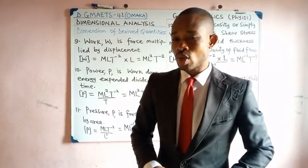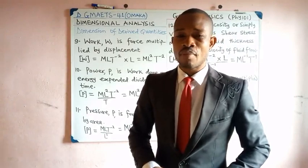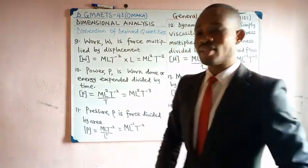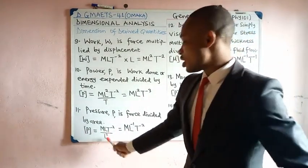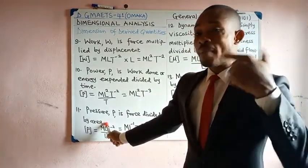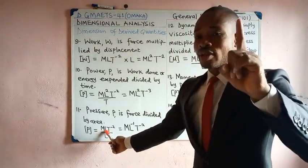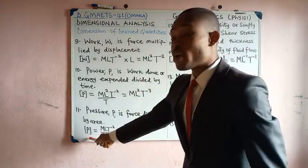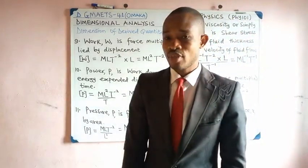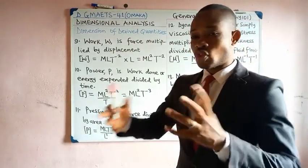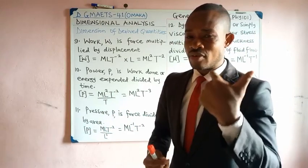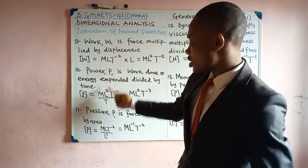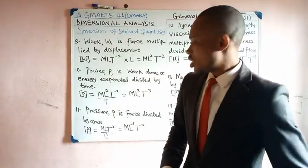Pressure, by Pascal's law, is force divided by area. The dimension of force is MLT⁻² and the dimension of area is L². Taking L² from denominator to numerator changes its power to −2. The L in the numerator already has power 1, so 1 + (−2) = −1 as the power of L. Therefore, the dimension of pressure is ML⁻¹T⁻².